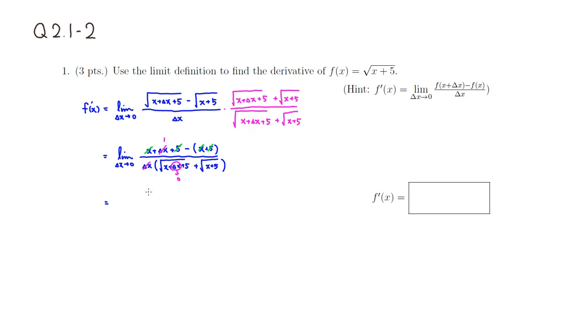1 on top over square root of x + 5 plus another square root of x + 5. So it's going to be 2 times the square root of x + 5. Therefore, the derivative f'(x) is 1 over 2√(x + 5).